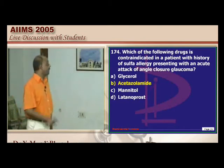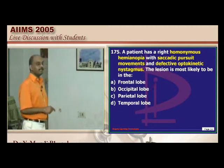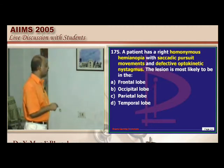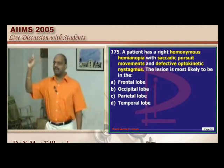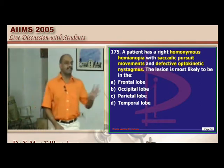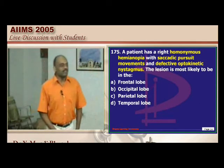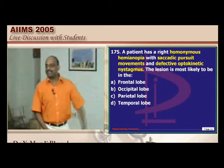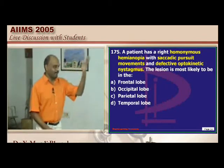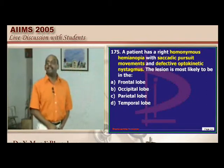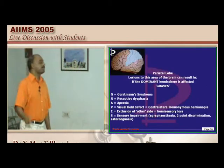Homonymous hemianopia with saccadic pursuit movement and defective optokinetic nystagmus — which lobe has the lesion? This is a classic exam question on lobe functions.